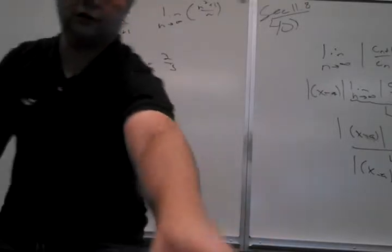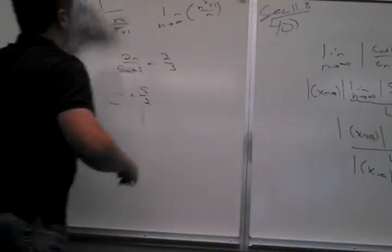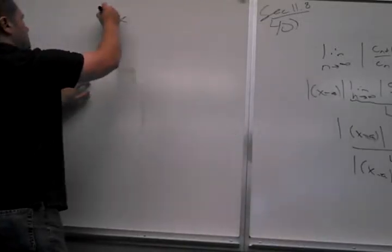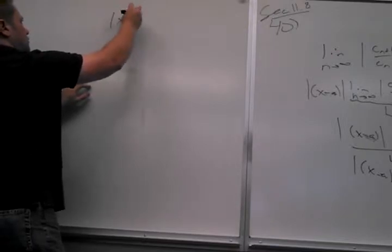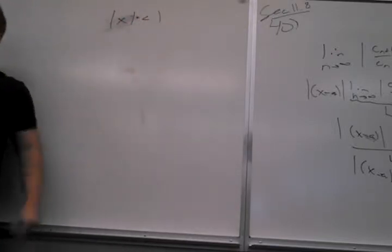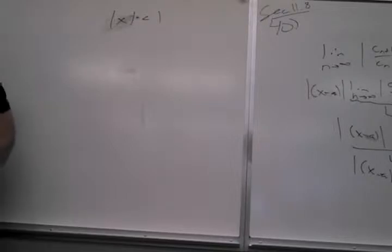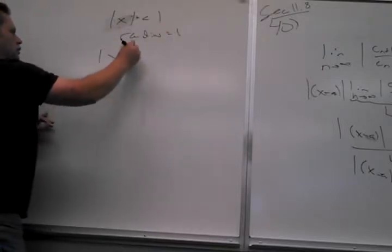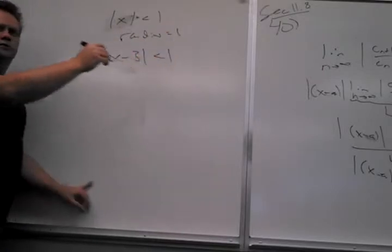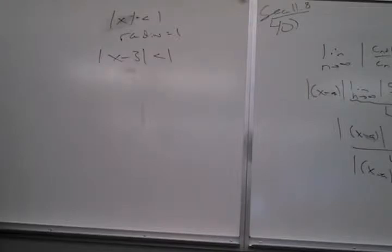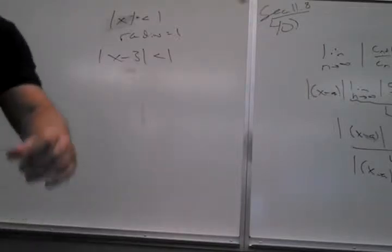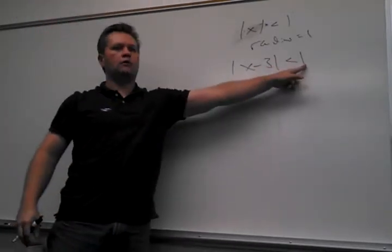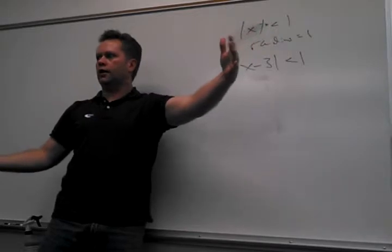So in general, let me give you a few examples in a row here. So if I just had this, the radius of convergence is obviously 1. Just doing this — does that change the radius? No, it doesn't. It changes the center. The center is now 3, but I want to go out 1 from there. So the radius is still 1.